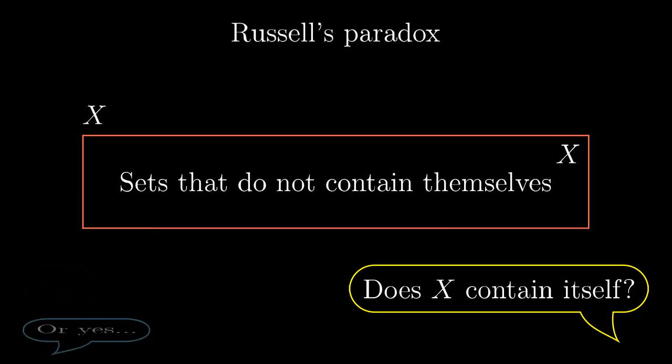And vice versa. If X contains itself, it shouldn't have been included in X. So X contains itself if and only if it doesn't contain itself. Paradox.